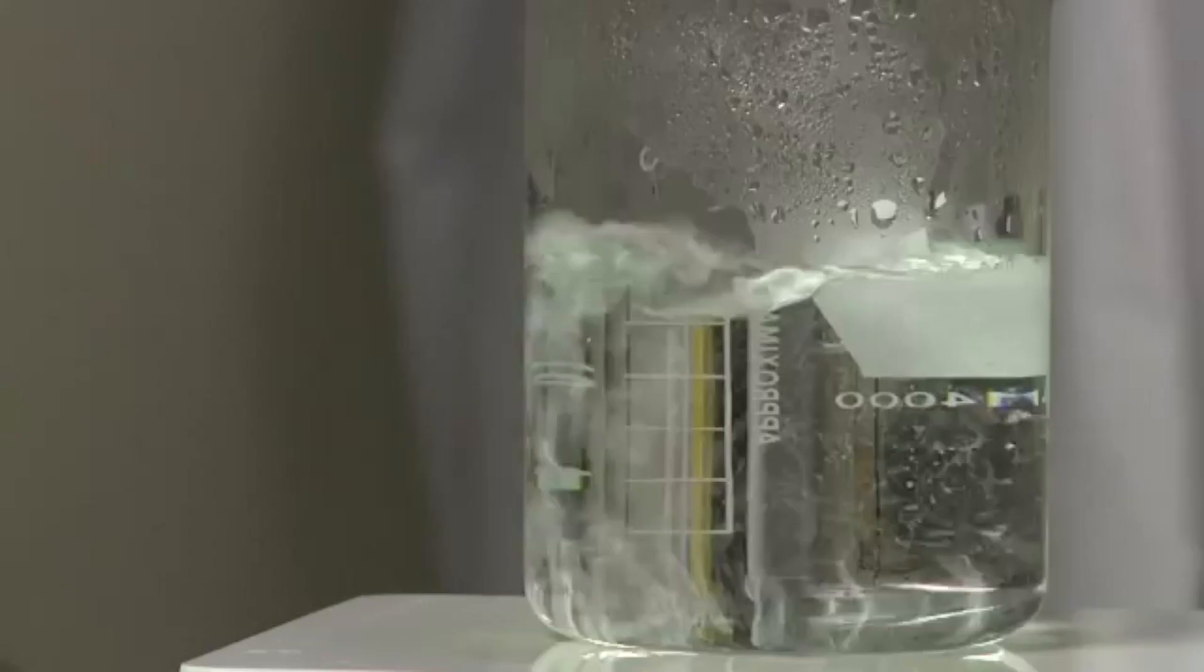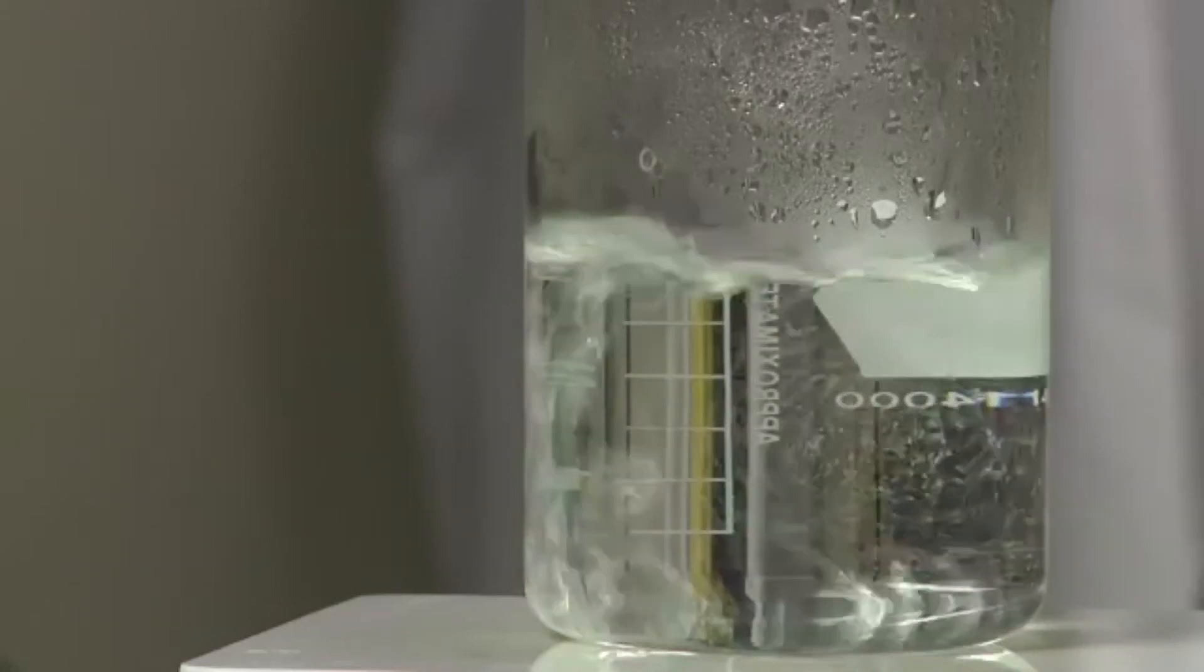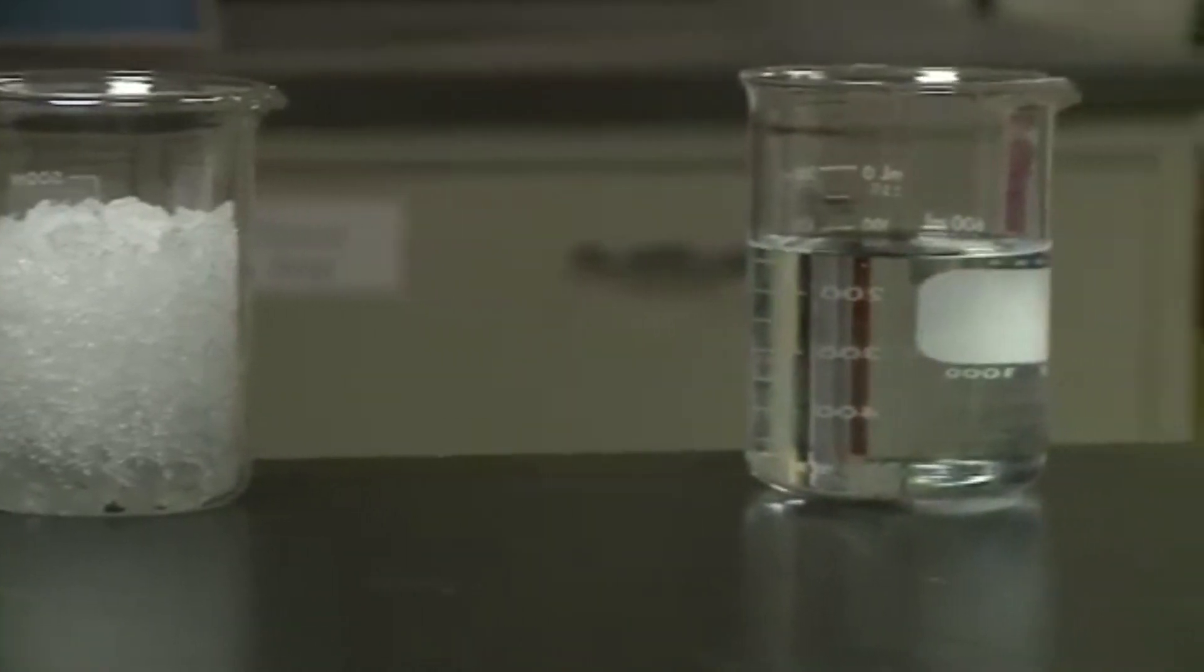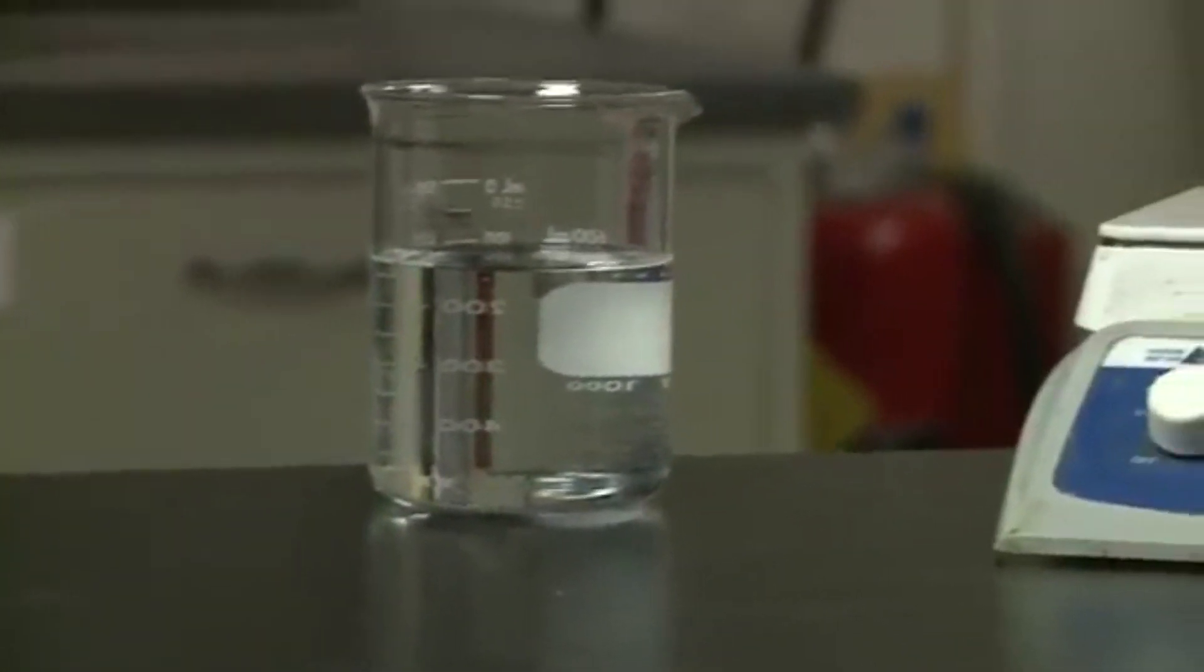There is also a phase change when water boils. Here, the liquid water becomes water vapor. But what is the difference between the phases? The difference is how the individual water molecules are arranged.